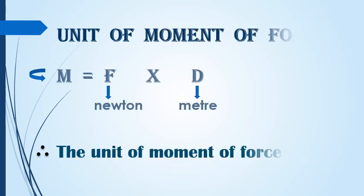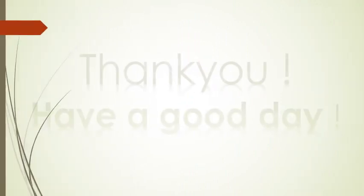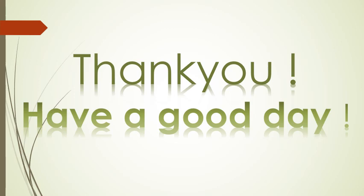Up till now, we have learnt the definition of the moment of force, the factors on which it depends, the formula, and seen examples. Now let us see the unit in which moment of force is measured. We know that moment of force equals F into D. The SI unit of force is Newton and the SI unit of distance is metre. Therefore, the SI unit of moment of force is Newton metre. That's all for today. We will proceed with the legacy of learning in the upcoming videos and continue this chapter further. Thank you everyone for being here. Have a good day.